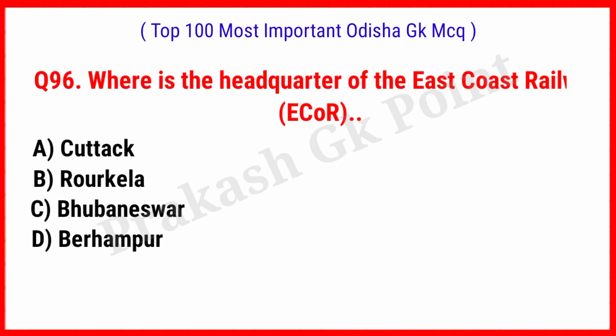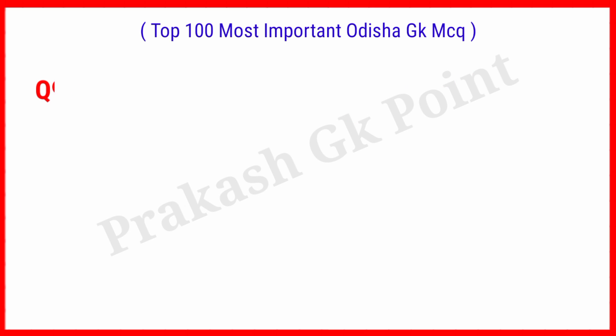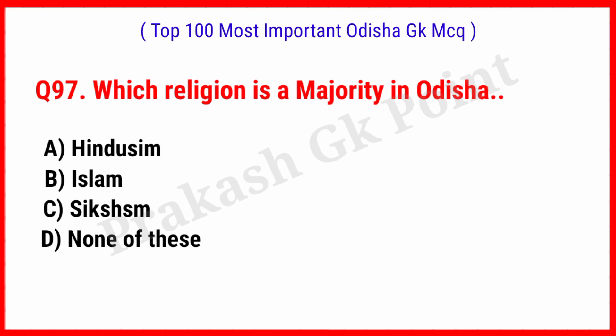Where is the headquarter of the East Coast Railway? Answer: Option C, Bhubaneswar. Which religion is the majority in Odisha? Answer: Option A, Hinduism.